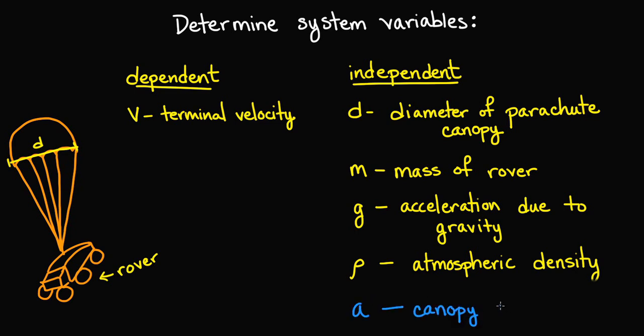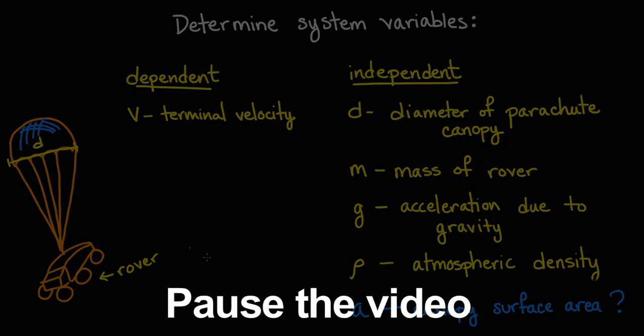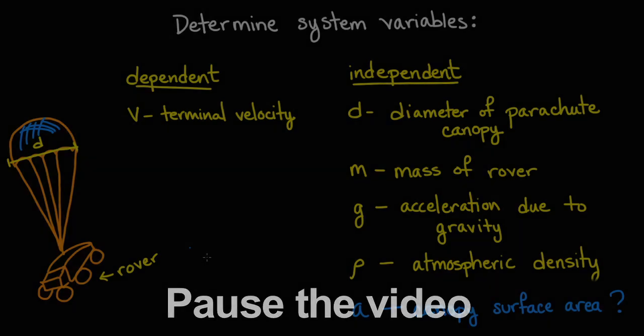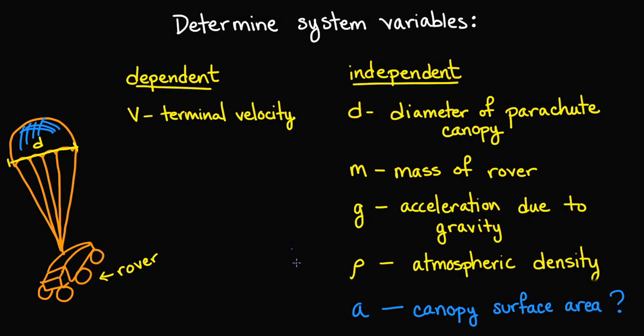Why didn't we include the surface area of the parachute canopy in our list of independent variables? Pause the video and take a moment to discuss with a classmate. We didn't include the surface area of the canopy because it is not independent from the diameter of the canopy. In fact, we can determine the area as a function of diameter, so we don't need both.